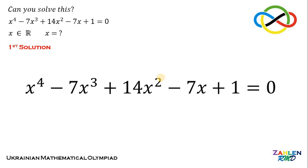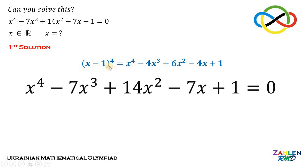On our first solution, notice that x to the fourth minus 7x cubed plus 14x squared minus 7x plus 1 is almost similar to the expansion of (x minus 1) raised to the fourth power, because (x minus 1)^4 is equivalent to x to the fourth minus 4x cubed plus 6x squared minus 4x plus 1.